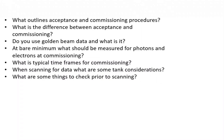Say you're on your Part 3 exam and you get a question similar to this. It may be broken down into fewer parts, but I wanted to cover more rather than less. Topics include: what outlines acceptance and commissioning procedures, what is the difference between acceptance and commissioning, do you use golden beam data and what is it, at bare minimum what should be measured for photons and electrons at commissioning, what are typical time frames for commissioning, when scanning for data what are some tank considerations, and what are some things you'd want to check prior to actually scanning.